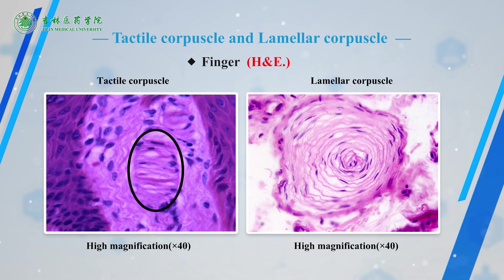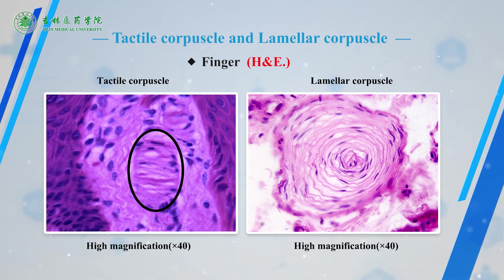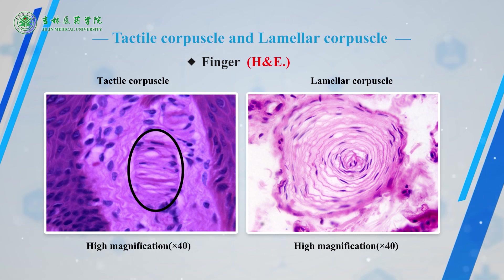The lamellar capsule, which appears as a round or elliptic body, is located in the connective tissue of the deep layer of dermis. The center of the lamellar capsule appears as a red dot in cross section or a rod-like structure in longitudinal section. The rod-like structure is called the inner core.